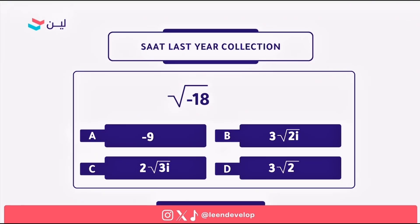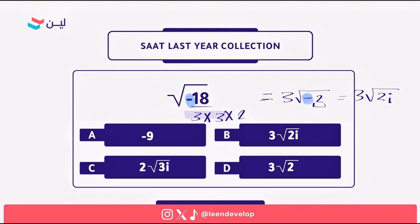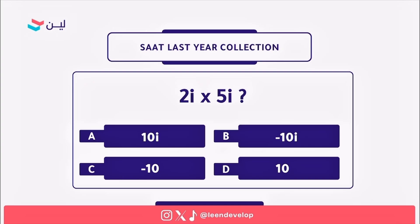This is also an easy question: the square root of minus 18. If we factor 18, that gives 3 multiplied by 3 multiplied by 2. Since 3 is repeated twice, we can take it outside the square root, giving 3√2. The negative sign inside the square root is represented by i, so the answer is 3√2·i — the correct answer is B.